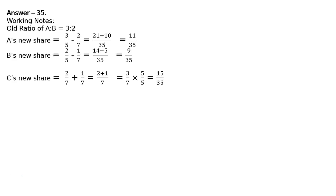C's new share is 2/7 from A plus 1/7 from B, which equals 3/7. To make the denominator 35, multiply by 5. That is 15/35.